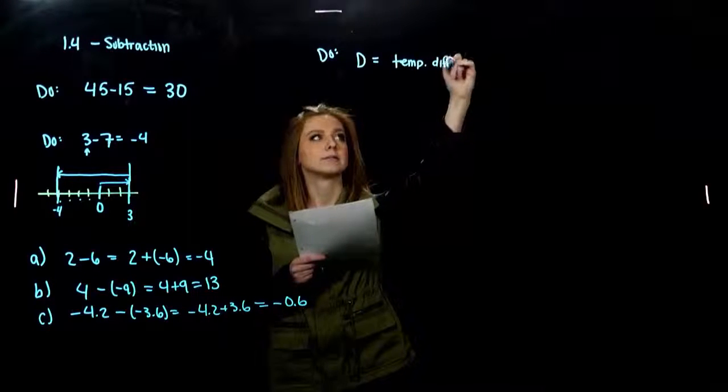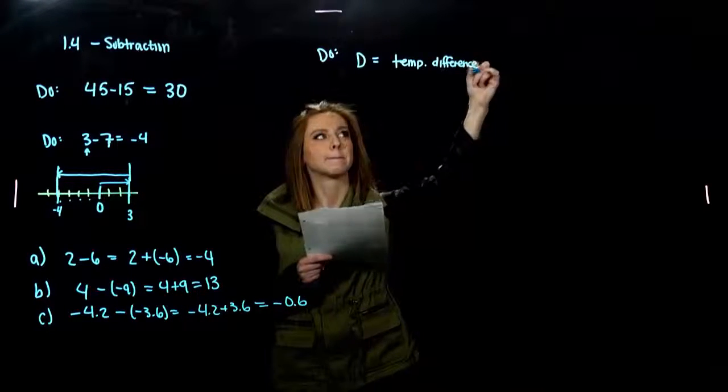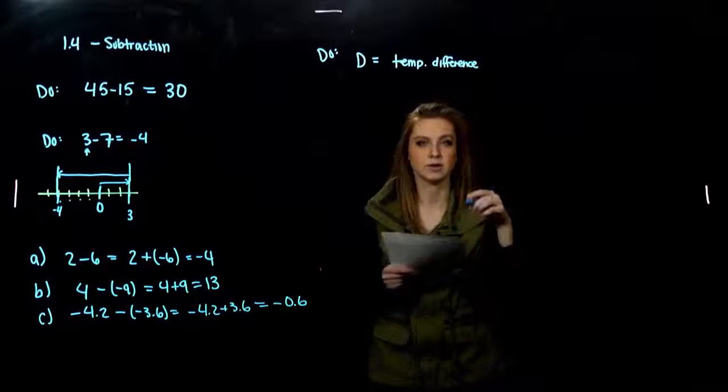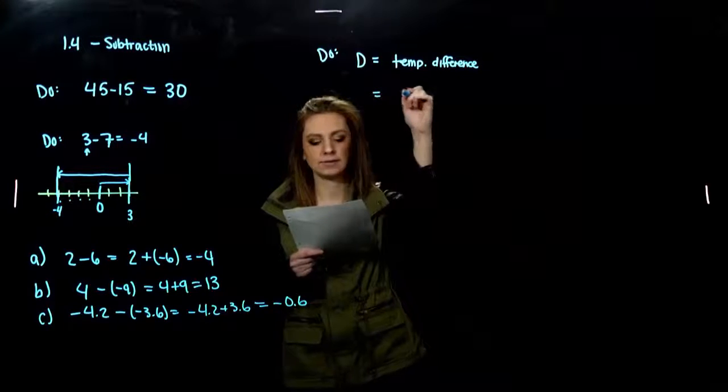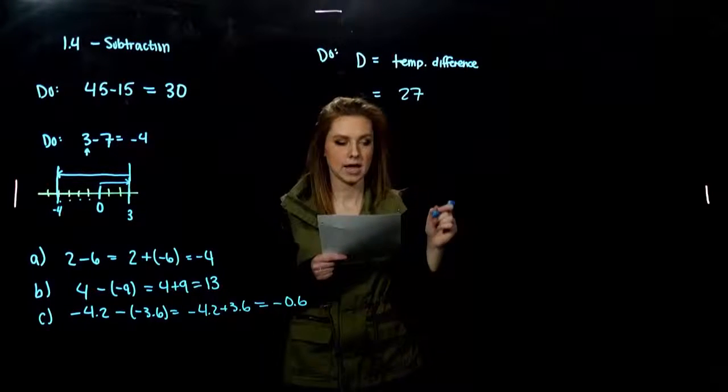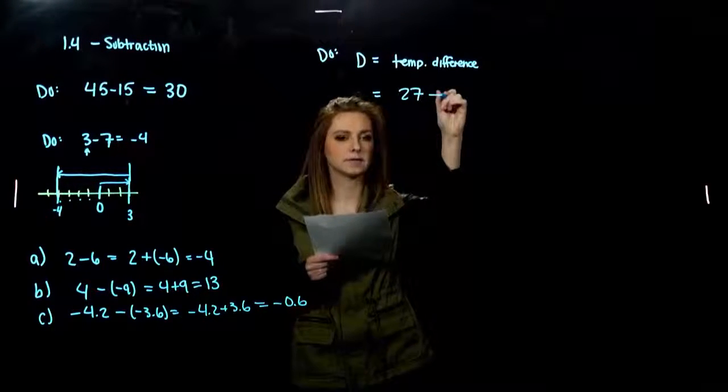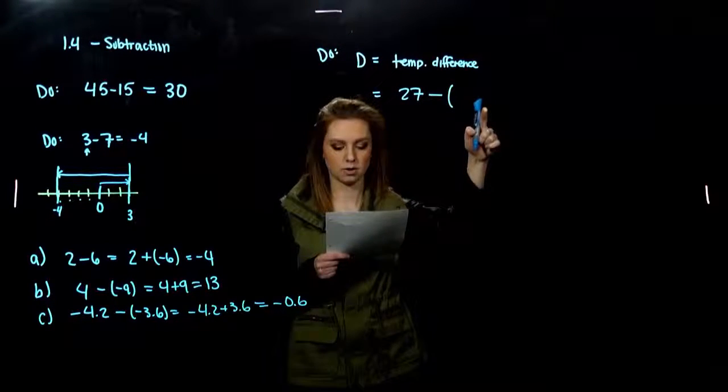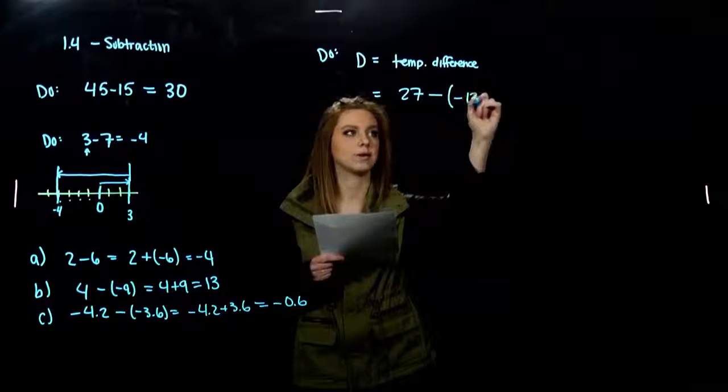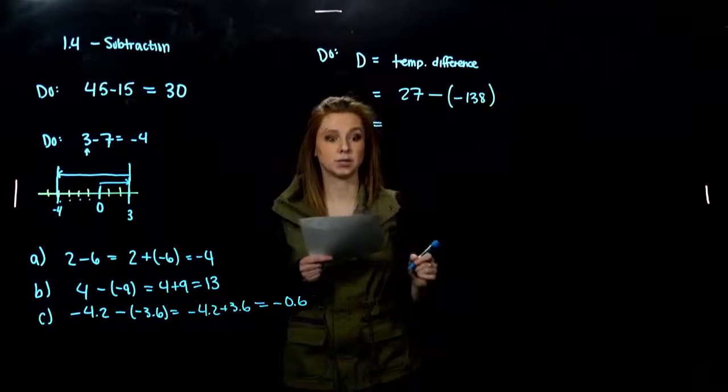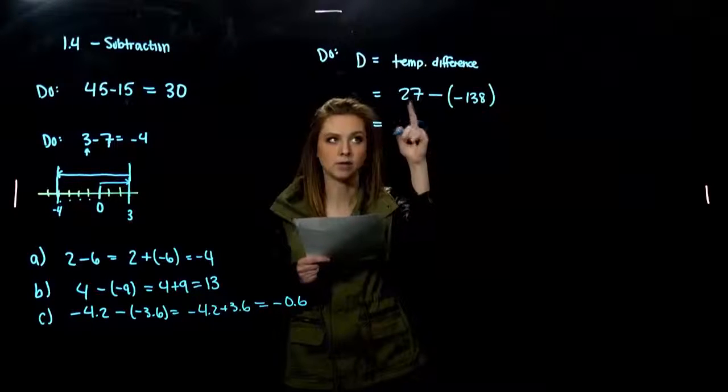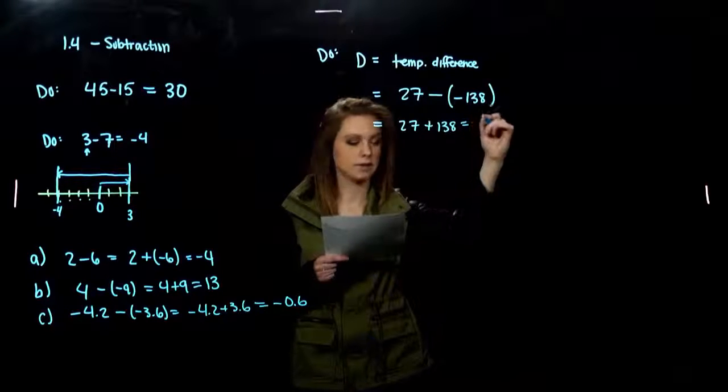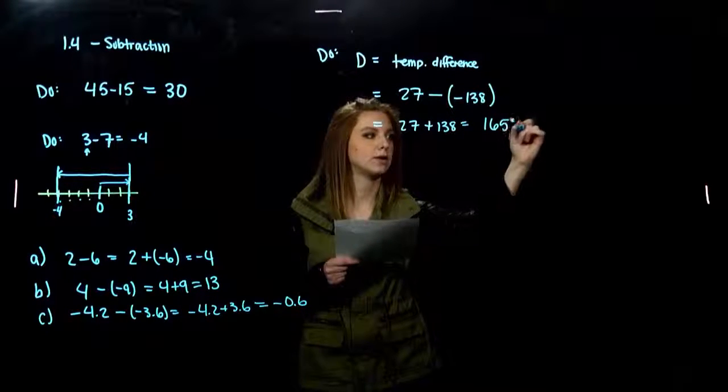So, I'm going to let D be the temperature difference. I'm trying to find the difference between the highest value. So, the warmest that it is is 27 degrees Celsius. And, the coldest it gets is negative 138. So, the temperature difference is going to be 27 plus 138, which gives us 165 degree difference.